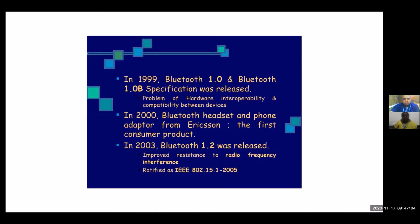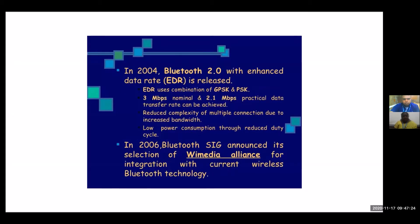In 2003, Bluetooth version 1.2 was released, which improved resistance to radio frequency interference. It was named IEEE 802.15.1 in 2005. Bluetooth version 2.0 was released with Enhanced Data Rate (EDR), using a combination of GPSK and PSK. The Bluetooth speed for version 2.0 was theoretically 3 Mb/s, with a practical throughput of 2.1 Mb/s — significantly better than version 1, which had only 1 Mb/s practical speed.